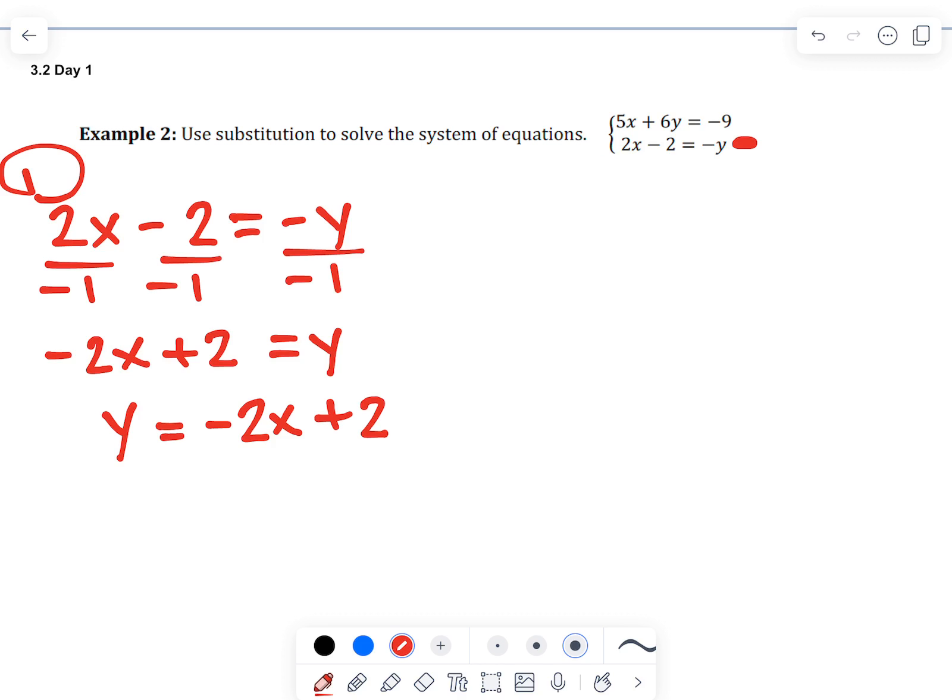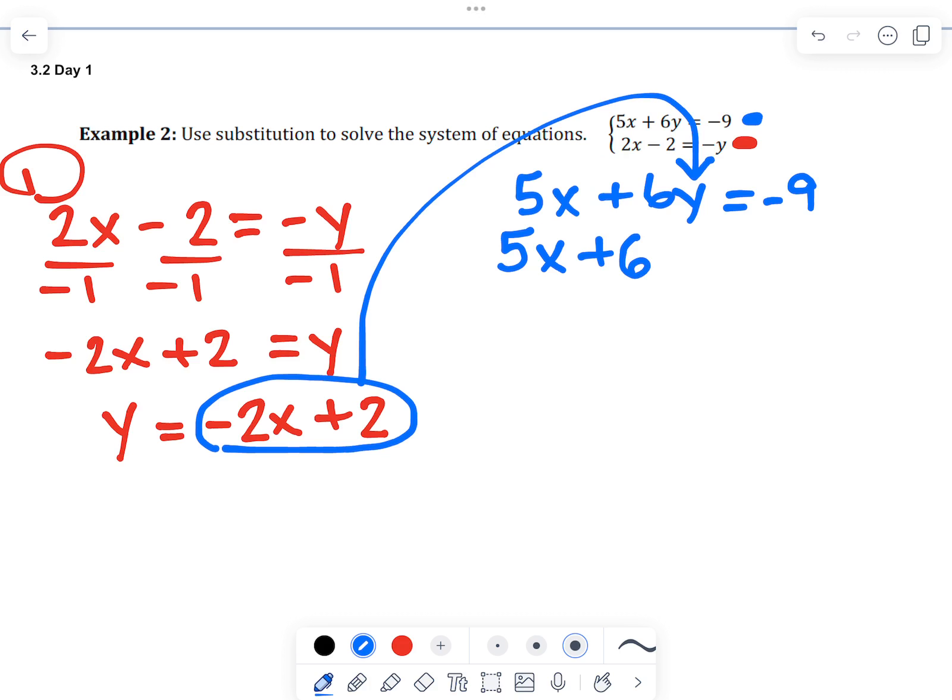Step 2 is to substitute that into the other equation. So here's my top equation. And we're going to take this negative 2x plus 2 and substitute it in for y. So this parenthesis is that negative 2x plus 2. Now we solve it for x.